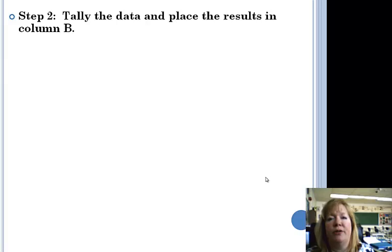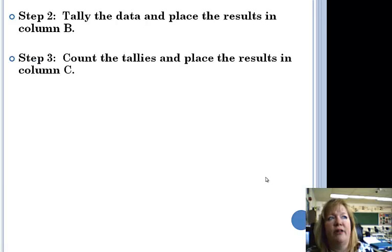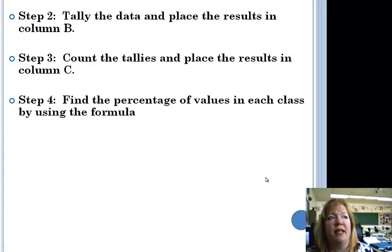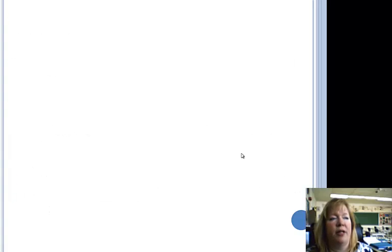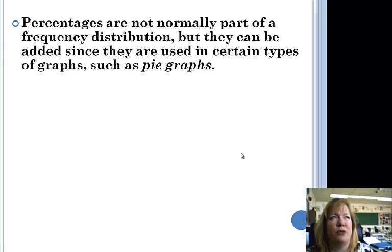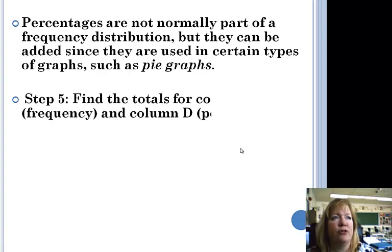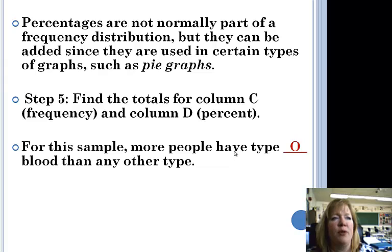Here's the steps that are written on your sheet. And we just did all of these on the chart. Tally the thing. We did that. Count the tallies. Place the result in column C. Find the percentage values by using the formula. F over N times 100%. F is the frequency of the class and N is the total number of values. For example, in the class type A blood, the percentage is 5 over 25 times 100% to get 20%. But I think you guys pretty much know percentages. Percentages are not normally part of frequency distribution, but they can be added since they are used in certain types of graphs, such as pie graphs. Find the totals for column C and D and they should total out. For this sample, more people have type O blood type than any other type.